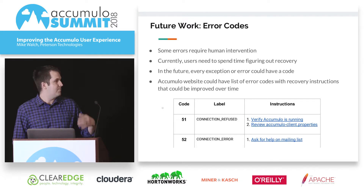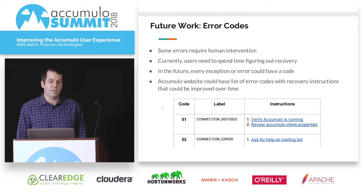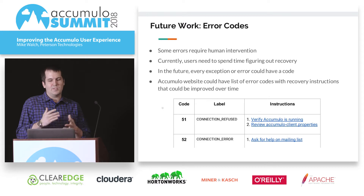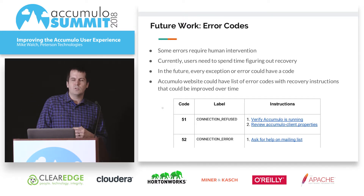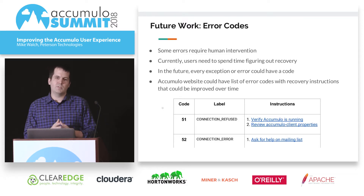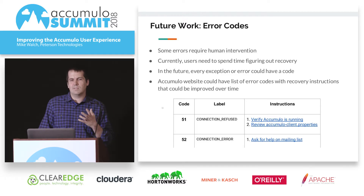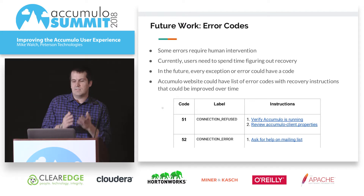This is future work I'd like to see — not for 2.0, but things that could be done. There are a lot of errors with Accumulo that require humans to intervene, and currently users aren't given much help. They have to Google it or look at the documentation, and if they haven't encountered that error before, it could take a while to figure out what to do. What we could do in the future is give every exception or error a potential code, and then people could go to the website and check out what to do for that. Over time we could improve those instructions. If you can take a situation that used to take a day and make it take 10 minutes, that would be awesome.